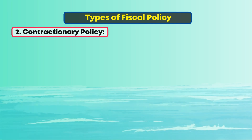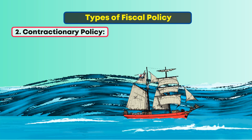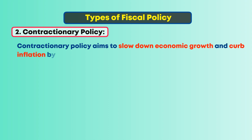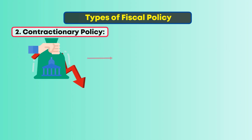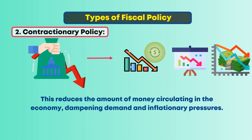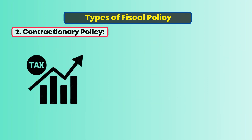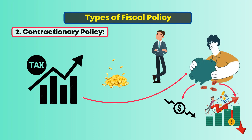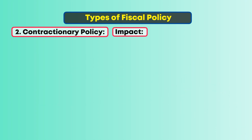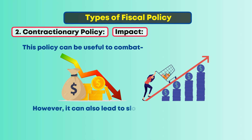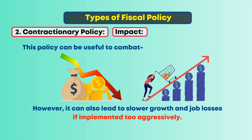Second, Contractionary Policy. Picture the captain tightening the sails in rough seas. Contractionary policy aims to slow down economic growth and curb inflation through decreased government spending, which reduces the amount of money circulating in the economy, dampening demand and inflationary pressures. Tax increases reduce disposable income, leading to less spending and potentially lower inflation. This policy can be useful to combat overheating economies or excessive inflation, but it can also lead to slower growth and job losses if implemented too aggressively.